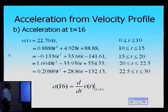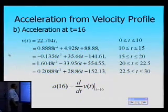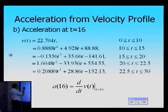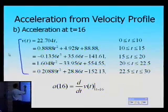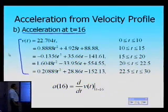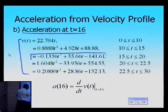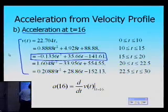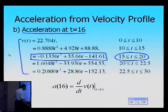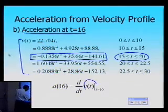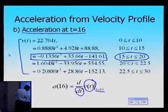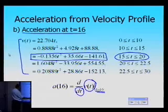More problems were asked: you were also asked to find the acceleration at t equal to 16. The splines we have are for the velocity, but we are asked to find the acceleration. So what I'm going to do is choose the proper velocity profile — the one valid between 15 and 20 — take its derivative with respect to time, and then substitute the value of t equal to 16 to find out the acceleration at 16.